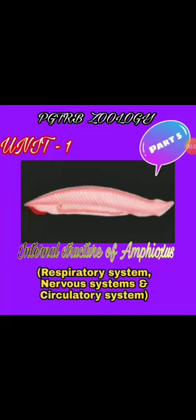Everyone, welcome to our channel PGTRP Zoology Class. What we need to talk about is the internal structure of Amphioxus — the respiratory system, nervous system, and circulatory system. We will talk about the circulatory system in the third class. Before that, please subscribe to our channel and press the bell icon on the right to get notifications.